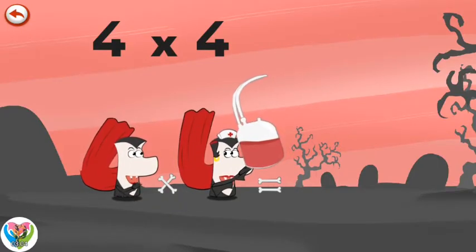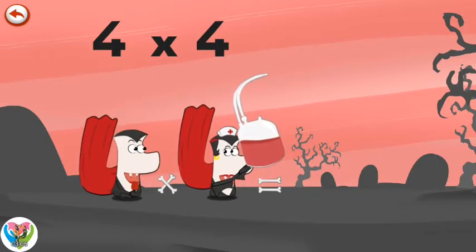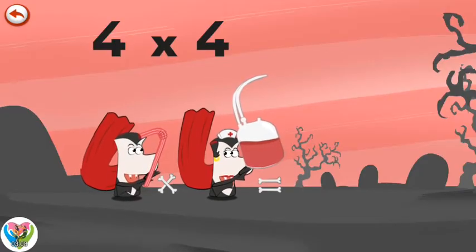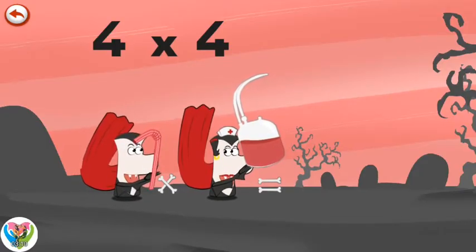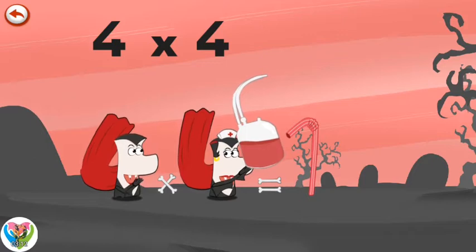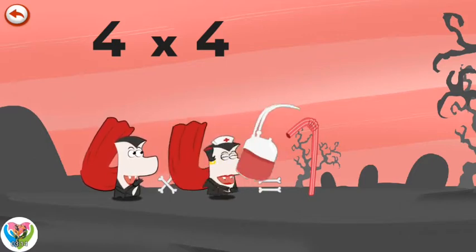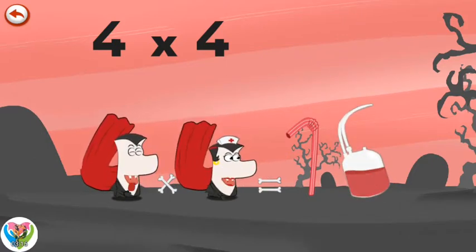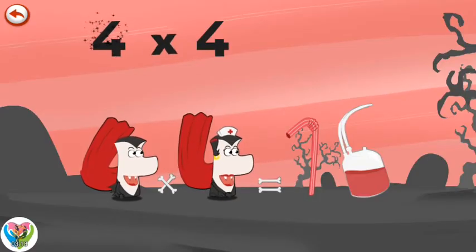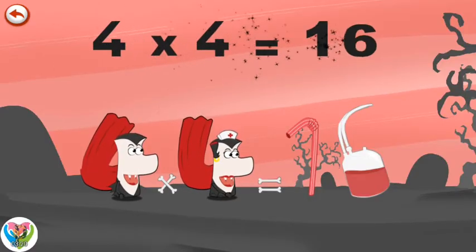There's nothing like a little snack to bring you back to health. Mr Vamp 4 brings out a straw in the shape of a one to sip from the bag of blood, which is in the shape of a six. Drink up! Four times four is sixteen.